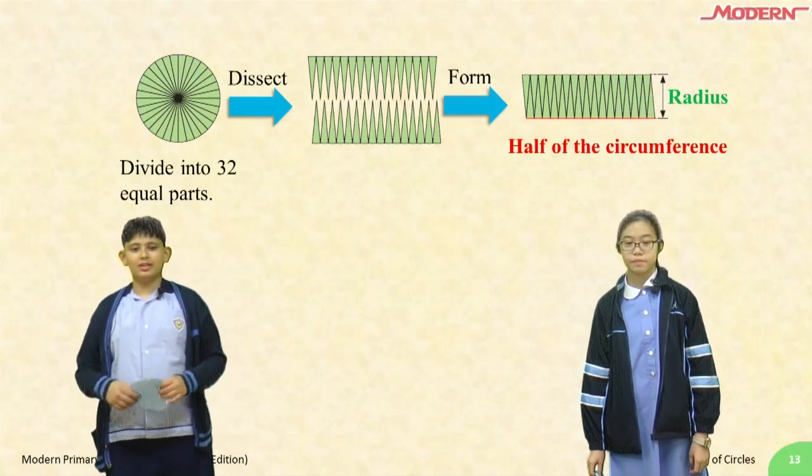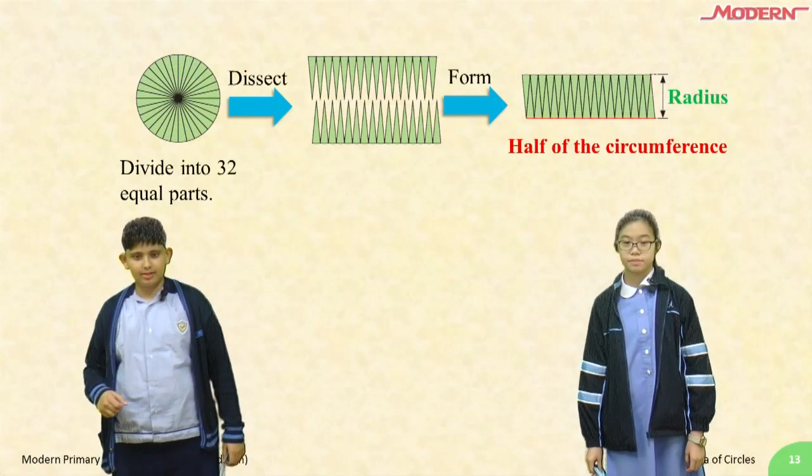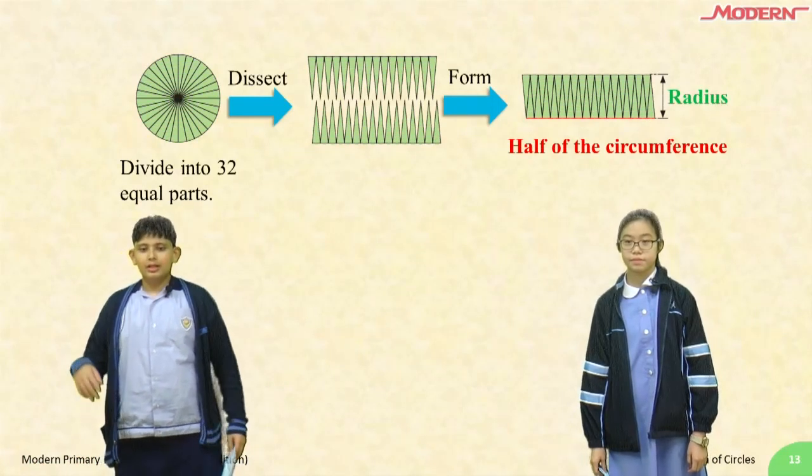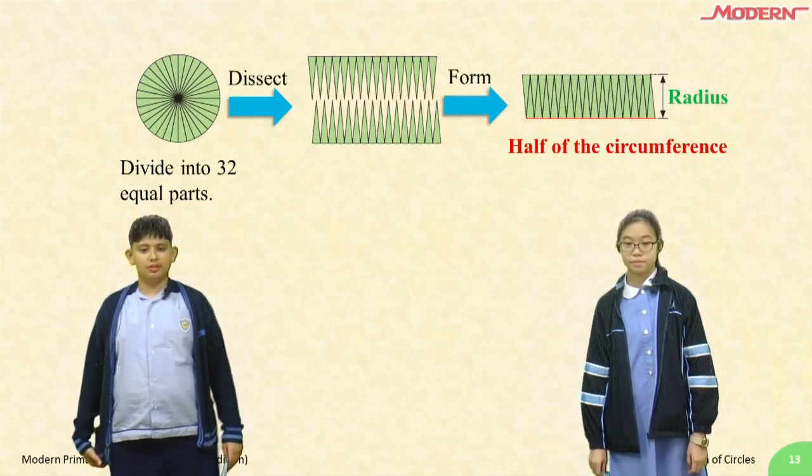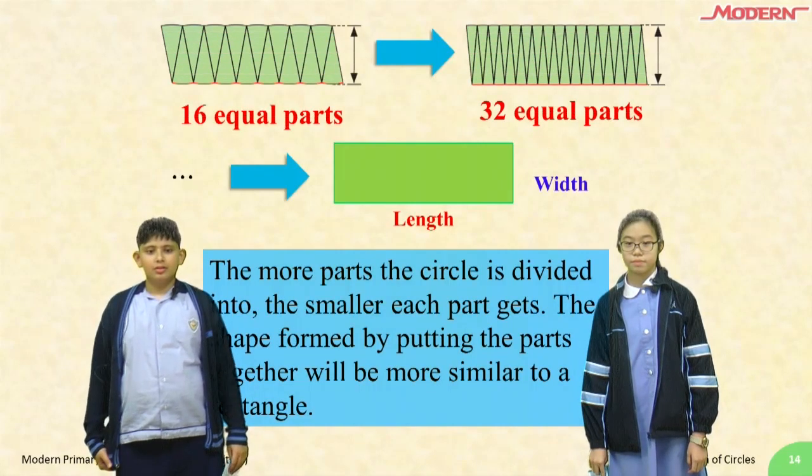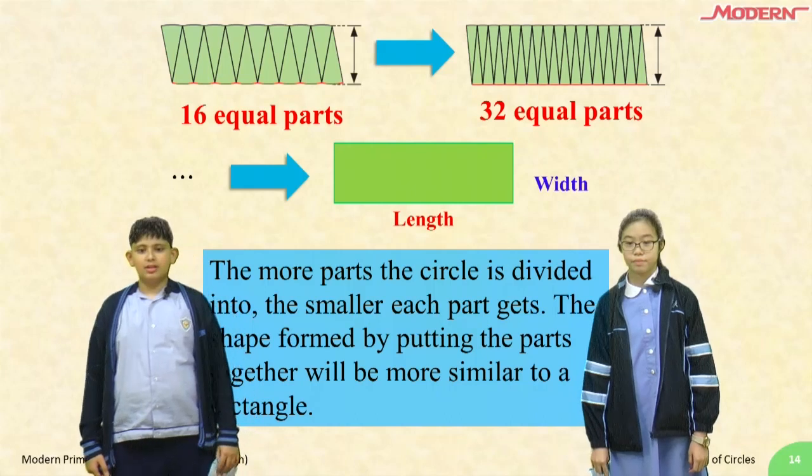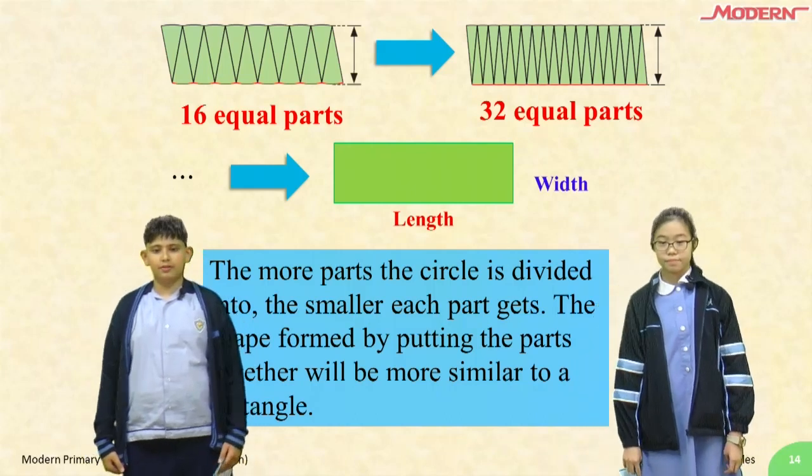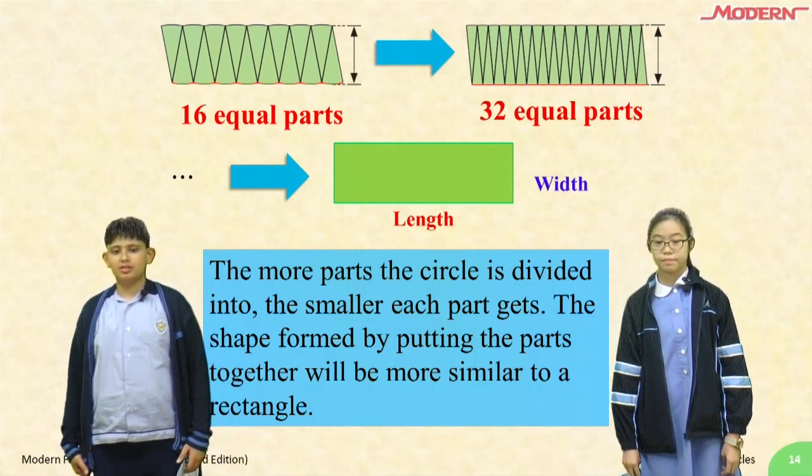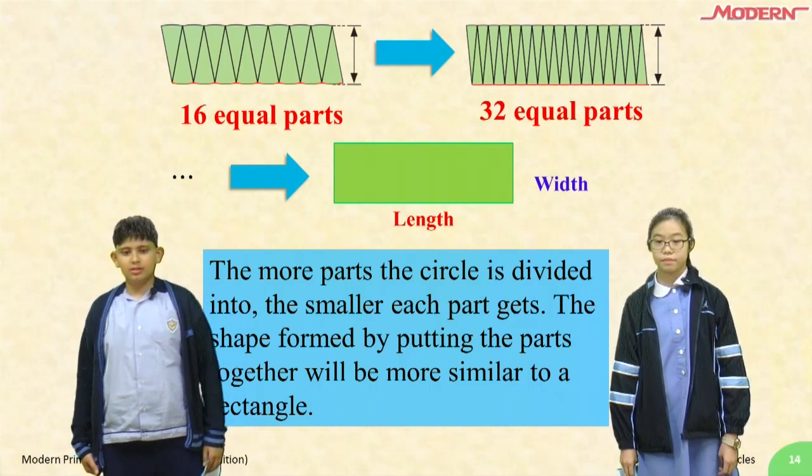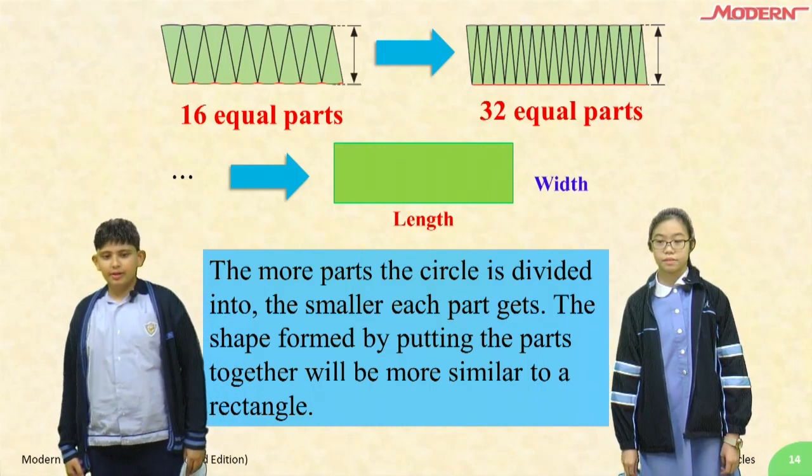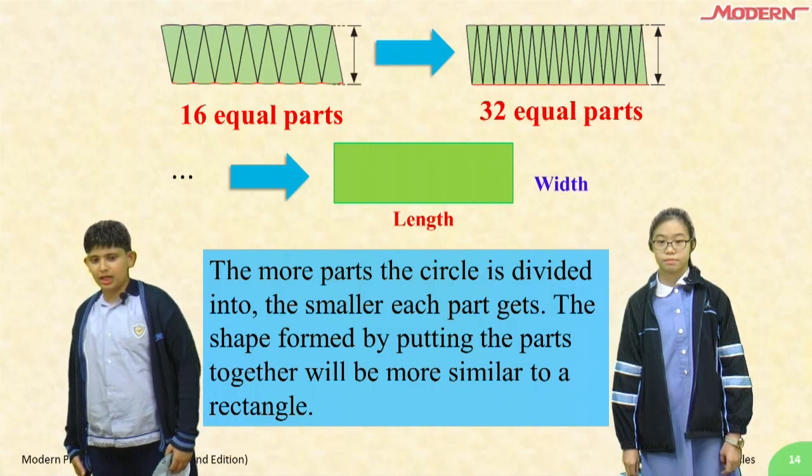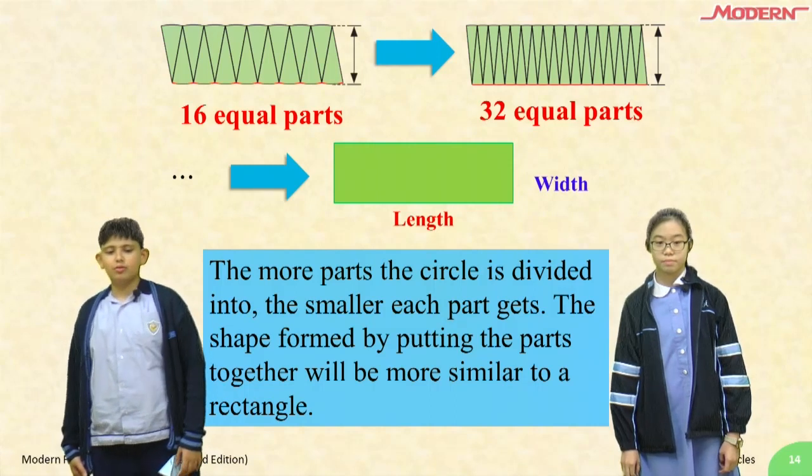Now, divide into 32 equal parts and dissect. Now, form it into another new shape. 16 equal parts and 32 equal parts are different. The more parts the circle is divided into, the smaller each part gets. The shape formed by putting the parts together will be more similar to a rectangle.